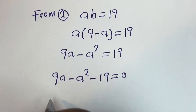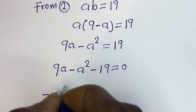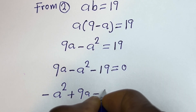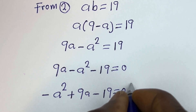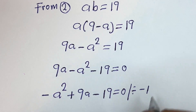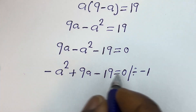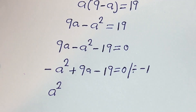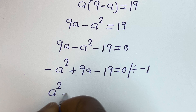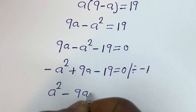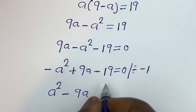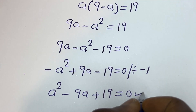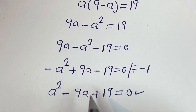Then this gives us 9a minus a squared minus 19 is equal to 0. Putting this in standard form: minus a squared plus 9a minus 19 equals 0. We can now divide all terms by minus 1, giving a squared minus 9a plus 19 is equal to 0. This is a quadratic equation — let's solve this using the quadratic general formula.